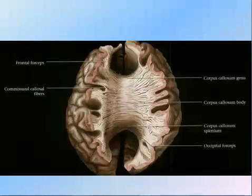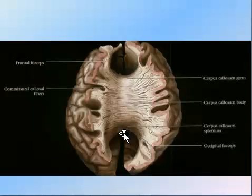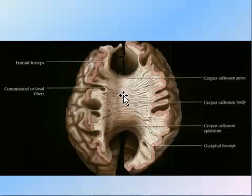Commissural fibers connect both cerebral hemispheres together. We have the genu of the corpus callosum, the body of the corpus callosum, and the splenium of the corpus callosum. These are called commissural fibers. Other commissural fibers are seen anteriorly.